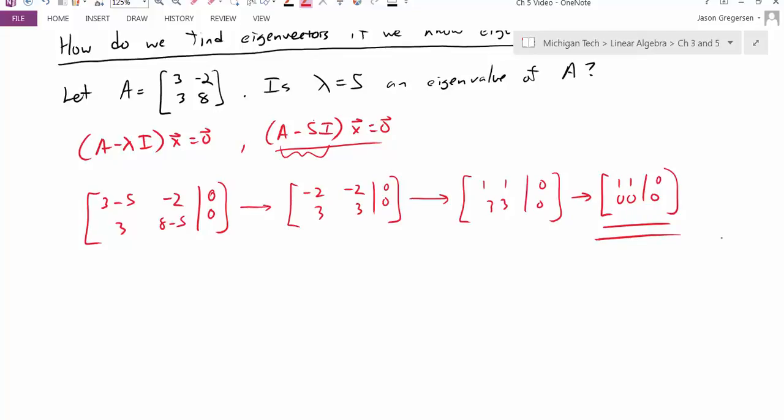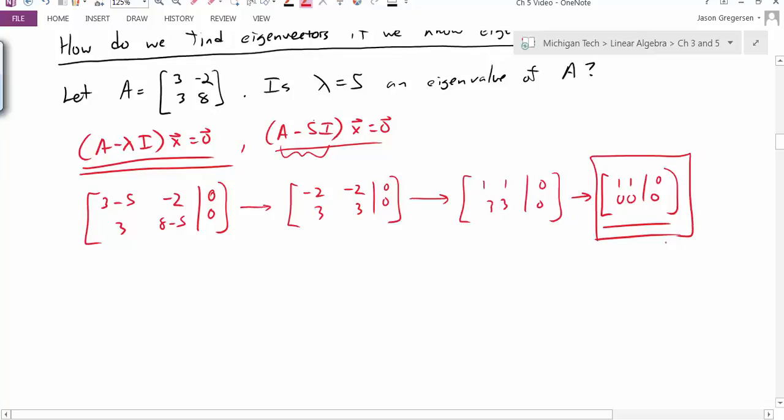So now that I've simplified this, I can really answer the question of is lambda equals 5 an eigenvalue. For lambda equals 5 to be an eigenvalue, I have to have non-zero solutions to this homogeneous equation. Because to find an associated eigenvector that's not equal to zero, there would have to be non-trivial solutions. So because I row reduced and looked at my final system over here and I see there are free variables, I know there must be non-trivial solutions.